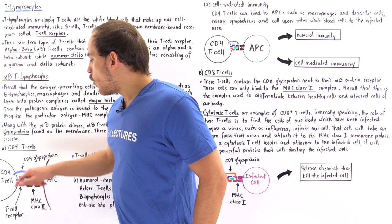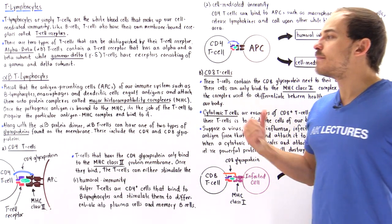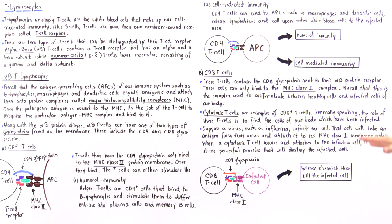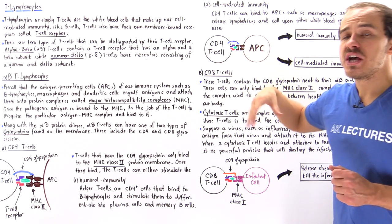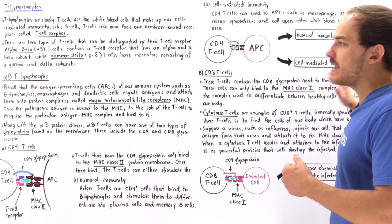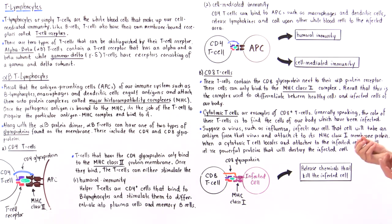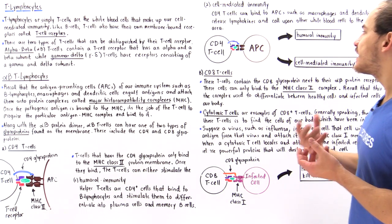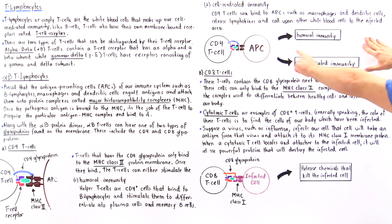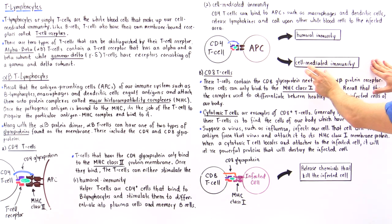Instead of the CD4 being a helper T cell, let's suppose we have some other type of T lymphocyte that binds to a macrophage — in such a case we can stimulate the cell-mediated immunity. CD4 T cells can bind to APCs such as macrophages and dendritic cells and release chemicals known as lymphokines, which stimulate our cell-mediated immunity, calling upon other macrophages and white blood cells to come to the infected area and engulf those pathogenic agents. So our CD4 T cells can either stimulate humoral immunity or cell-mediated immunity.